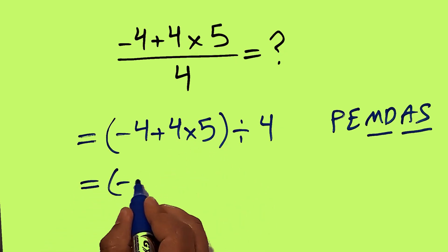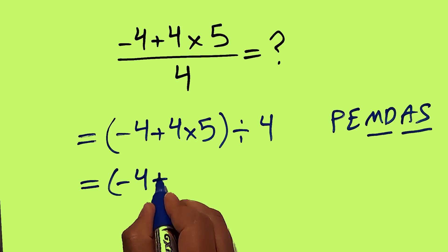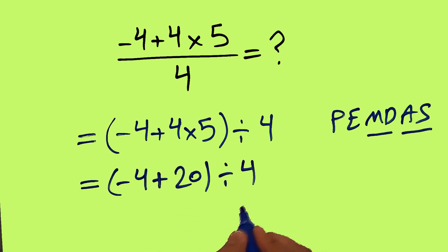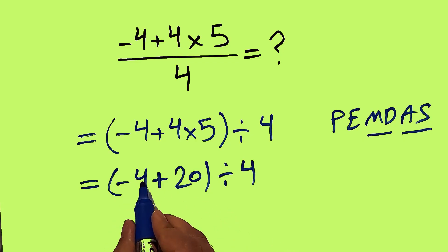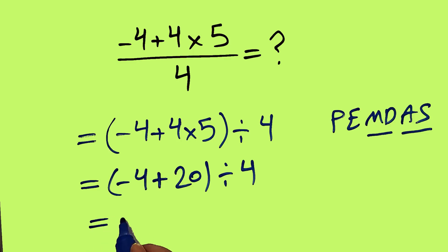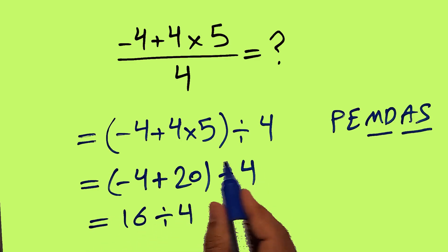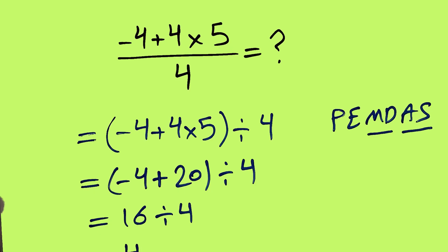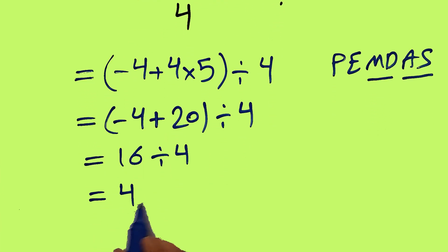So first this multiplication: 4 times 5 equals 20. So negative 4 plus 20 gives us 16. And 16 divided by 4 is equal to just 4. So our final answer to this problem is 4.